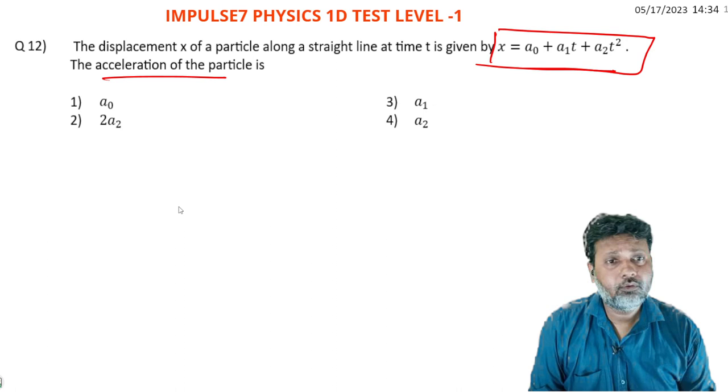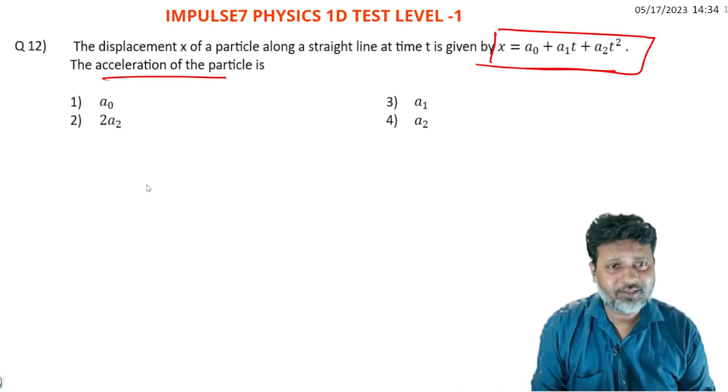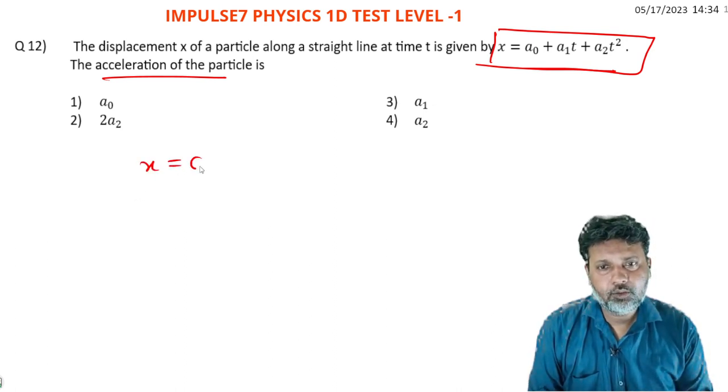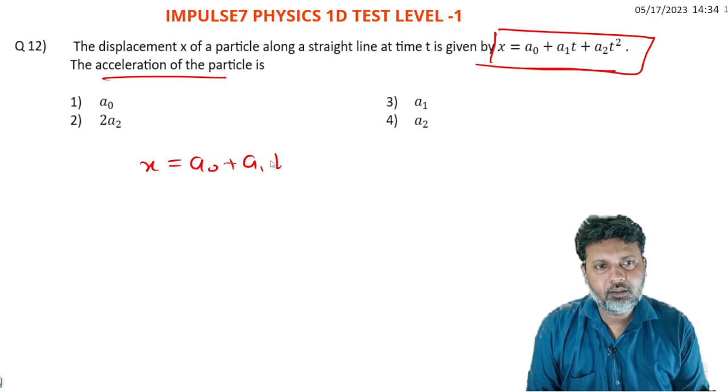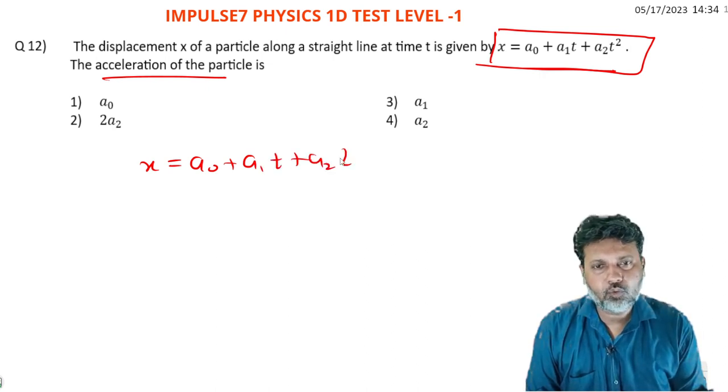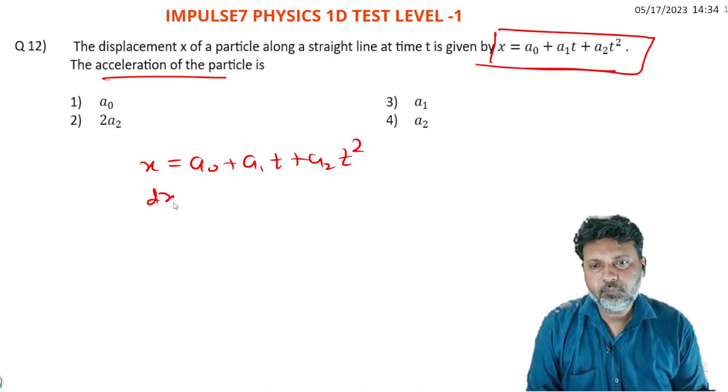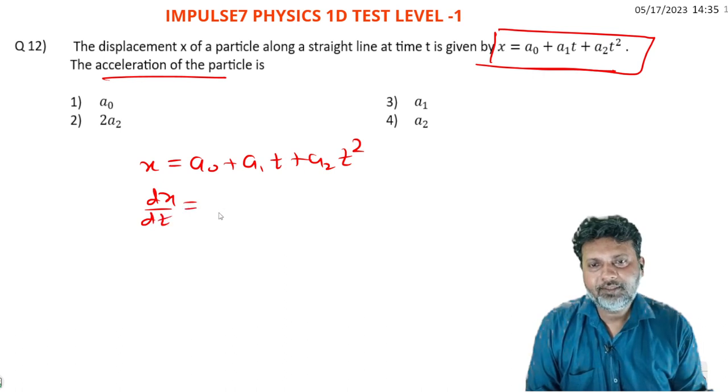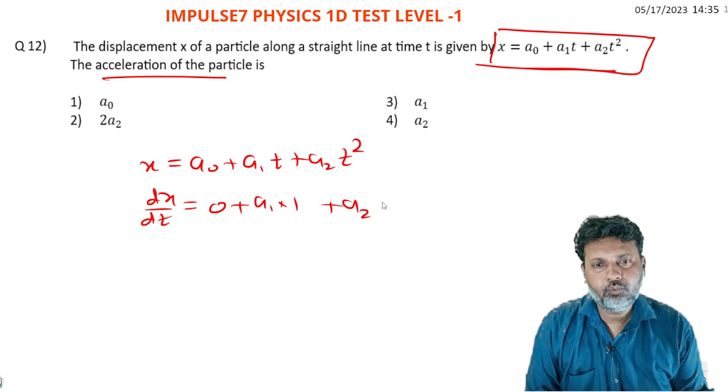By differentiating, we can find velocity. So x is equal to a0 plus a1*t plus a2*t squared. Differentiate with respect to time: zero plus a1 times one plus a2 times 2t. Differentiation with respect to time gives velocity.